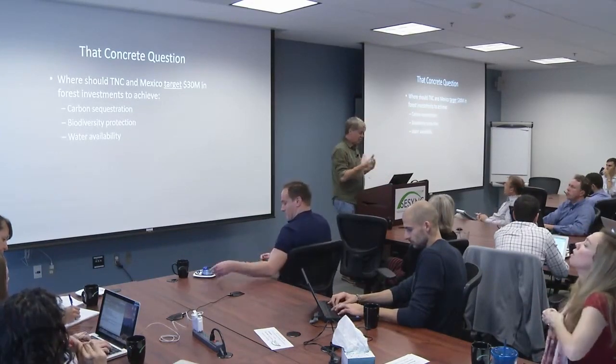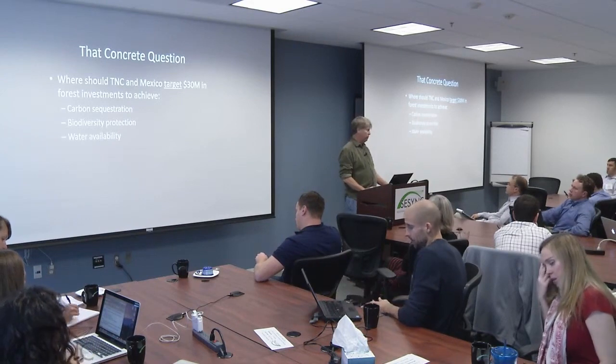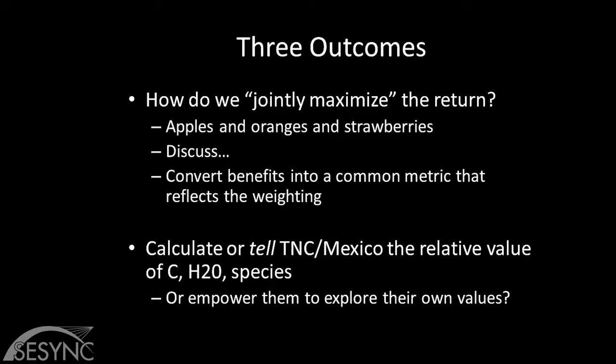Let's get back to this concrete question. There's a tool and set of models to answer it — we have this three-objective return we want to think about. How do we jointly maximize these three things? Someone mentioned: how do we weight those things? These are apples and oranges and strawberries. What would we normally do? We value them — we convert them into a common metric, dollars. We're not actually going to do that here, but just keep in mind that's what you should often be thinking about.